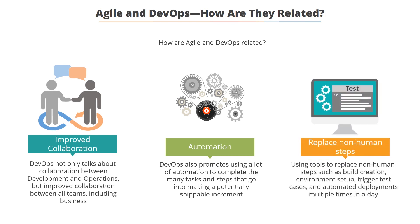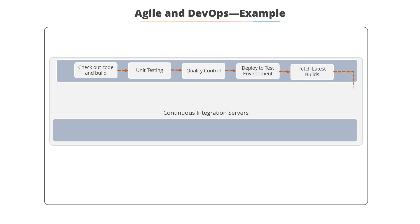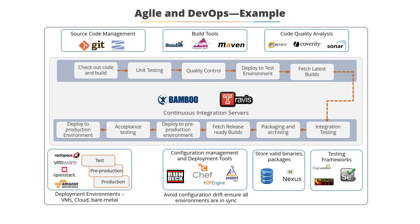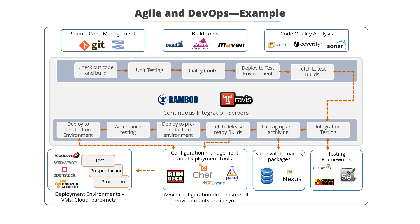DevOps also promotes heavy automation to complete the many tasks that go into making a deliverable potentially shippable — tools to replace manual steps like build creation, environment setup, triggering test cases, and automated deployments multiple times a day. Here you see a software development cycle from code check-in all the way to deployment in production, showing how DevOps automation and tooling incorporates many different tools across an SDLC cycle. With automated tools you can do multiple builds in a day, run test cases repeatedly after each build, and integrate continuous quality control into your delivery cycle with minimal manual intervention, including environment setup, configuration, and final deployment.